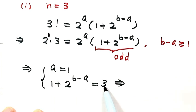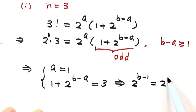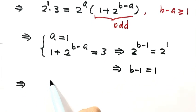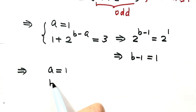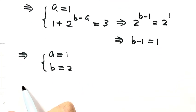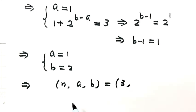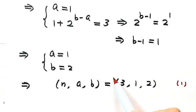Moving 1 to the right-hand side and substituting a = 1 gives 2^(b−1) = 2 = 2^1, so b − 1 = 1 and b = 2. The first solution is (n, a, b) = (3, 1, 2).